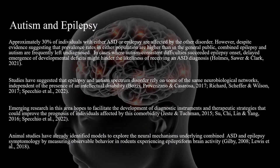Approximately 30% of individuals with either Autism Spectrum Disorder or epilepsy are affected by the other disorder. However, despite evidence suggesting that prevalence rates in either population are higher than in the general public, combined epilepsy and autism are frequently left undiagnosed. In cases where autism-consistent difficulties preceded epilepsy onset, delayed emergence of developmental deficits might hinder the likelihood of receiving an Autism Spectrum Disorder diagnosis. Studies have suggested that epilepsy and Autism Spectrum Disorder rely on some of the same neurobiological networks, independent of the presence of an intellectual disability.